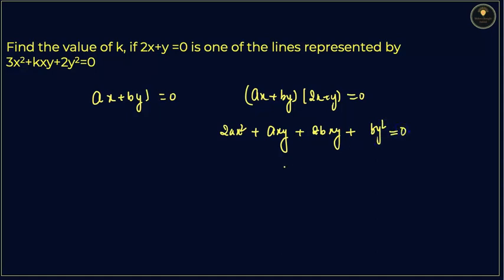Now let's compare everything with 3x square plus kxy plus 2y square and that is equal to 0. You will get the value of a that is equal to 3 by 2, you will get the value of b that is equal to 2.